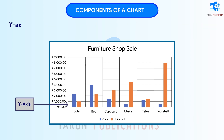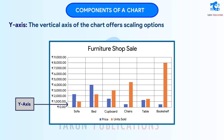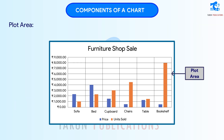Y-Axis: The vertical axis of the chart offers scaling options for the charts. It is also known as Value Axis. Plot Area: It is the area where the chart is plotted.